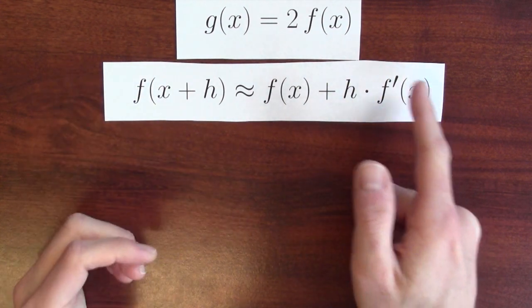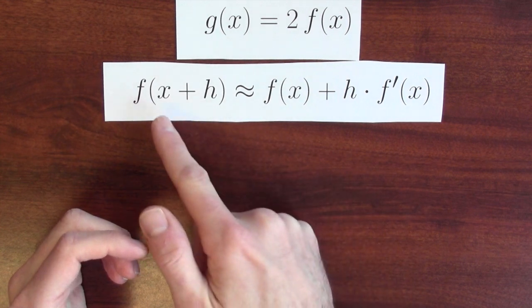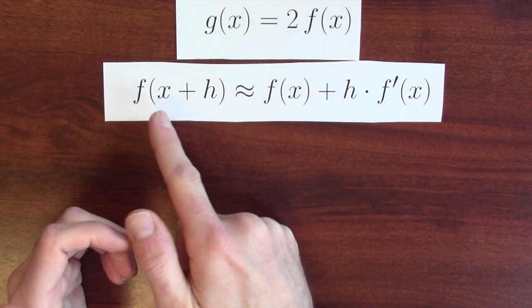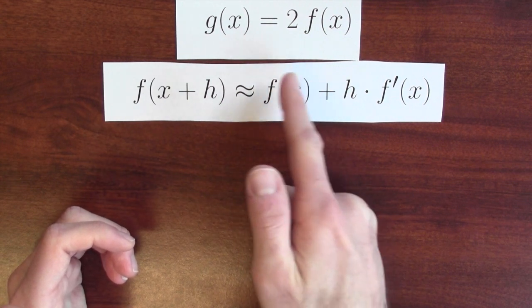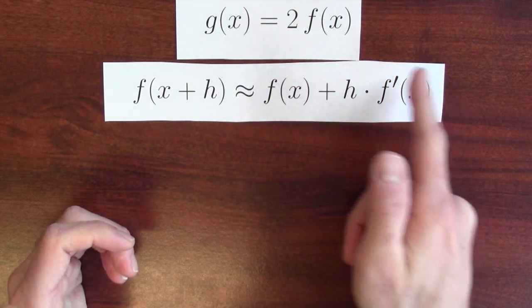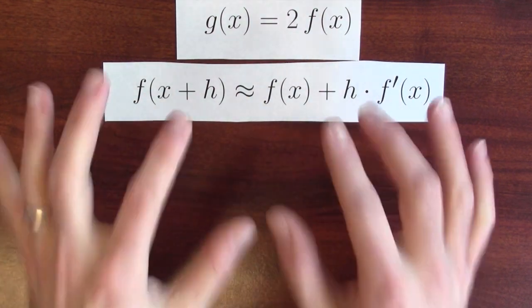So if I multiply the ratio of output change to input change by an actual input change, this, at least approximately, is telling me how much the output should change when I move from x to x plus h. F's new output at the input x plus h is its old output plus how much I expect the output to change. This is a really nice way to summarize what the derivative is saying.